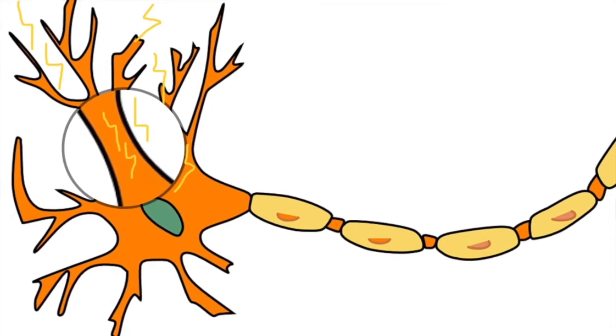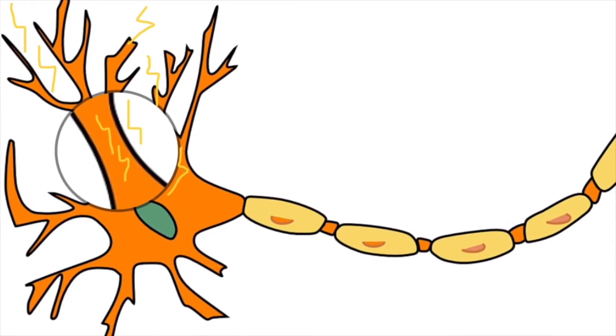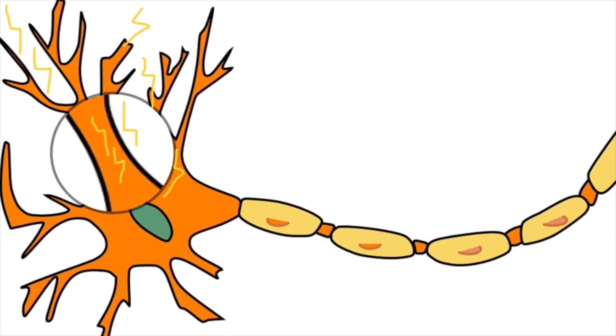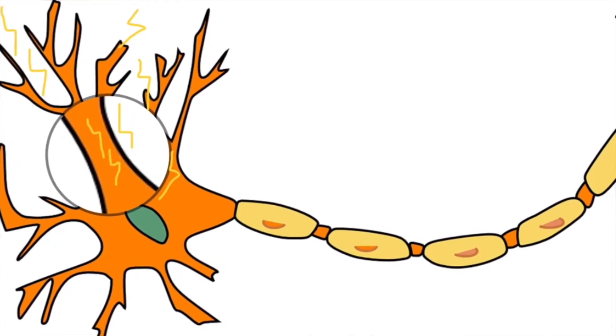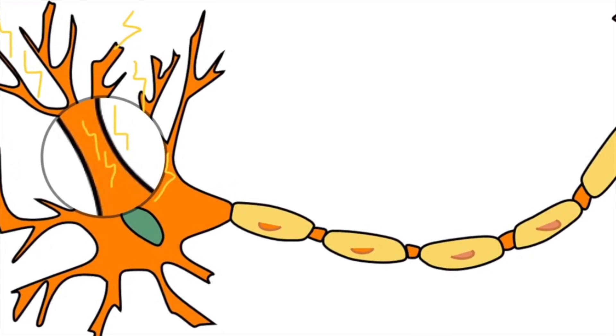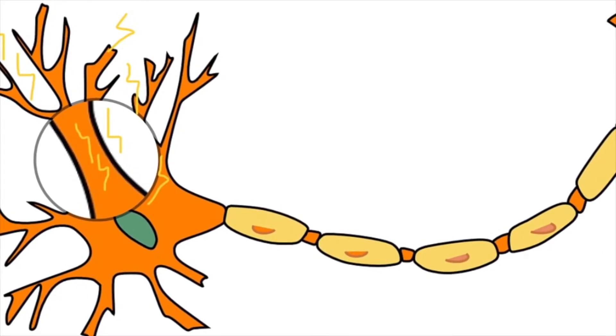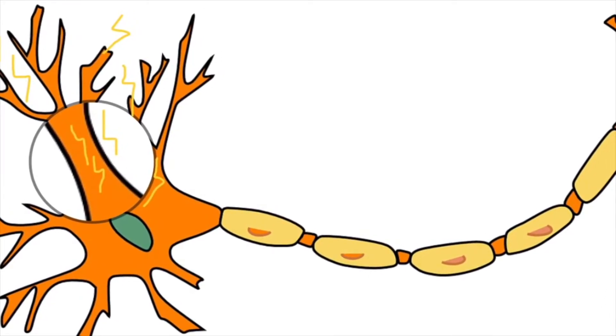Dendrites extend from the soma. The dendrites branch out and extend away from the cell in a tree root-like manner. The more surface area the dendrites cover, the easier the signal or electrochemical impulse can be received.